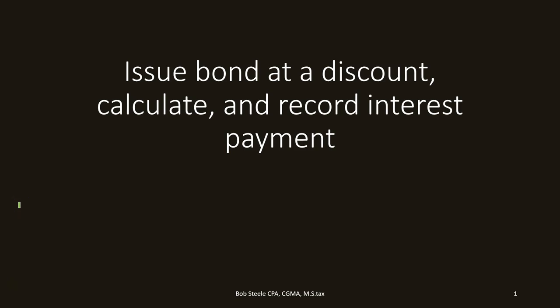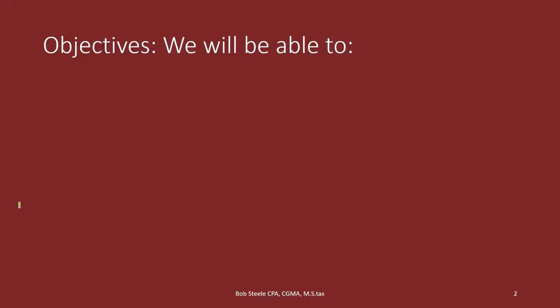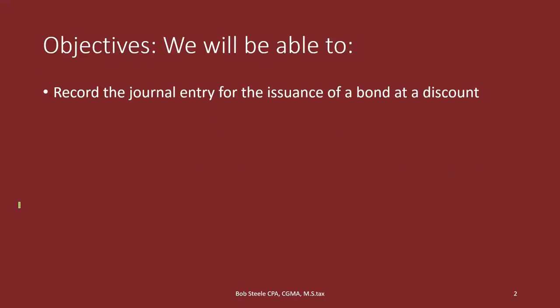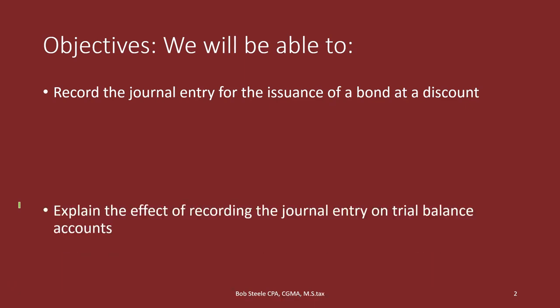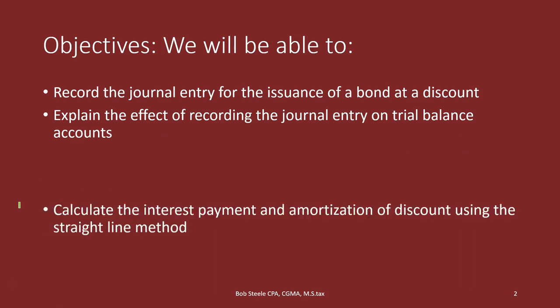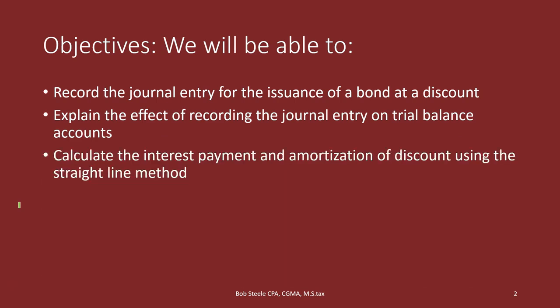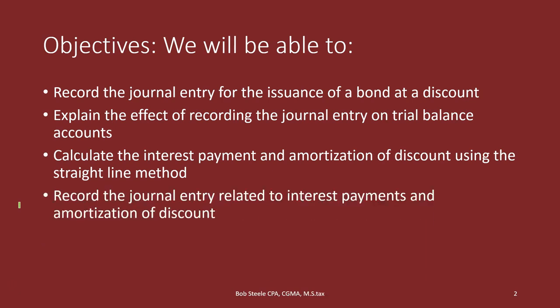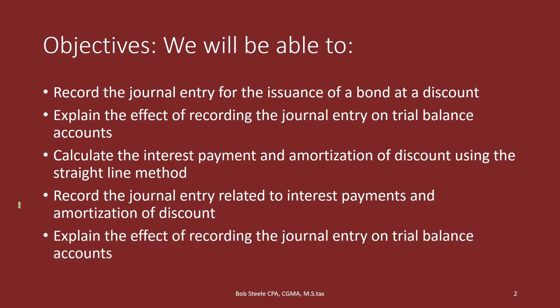In this lecture we're going to talk about the issuance of a bond at a discount. We will calculate and record interest payments on the bond. We will record the journal entry for the issuance of a bond at a discount, explain the effect on trial balance accounts, calculate the interest payment and amortize the bond discount using a straight-line method, and record the related journal entries.